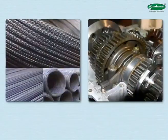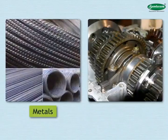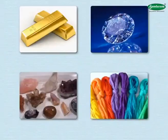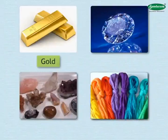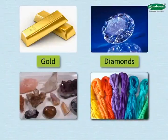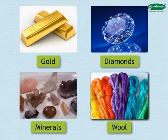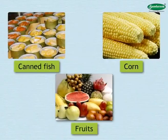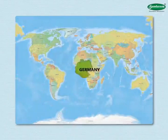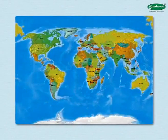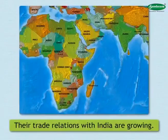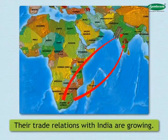The country imports different metals and machinery required for various industries. Its export list includes gold, diamonds, minerals, wool, canned fish, corn, and fruits. Germany, USA, UK, and Japan are the major trading partners of South Africa, and their trade relations with India are growing.